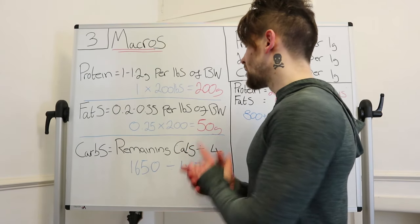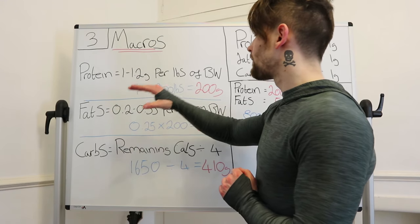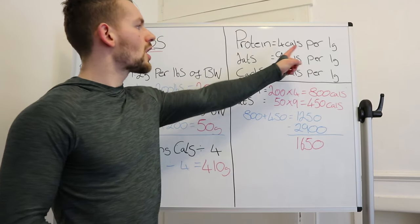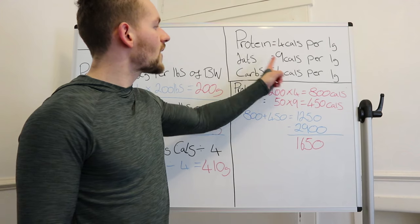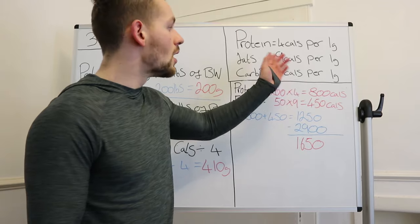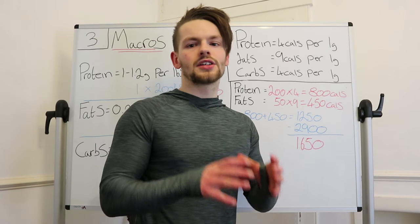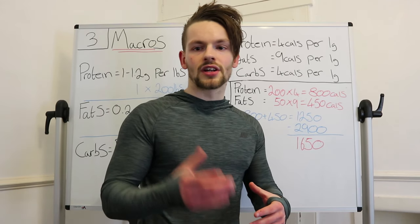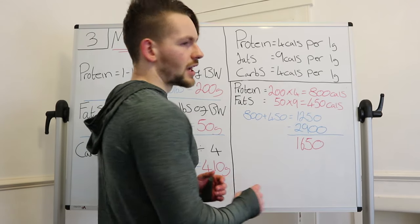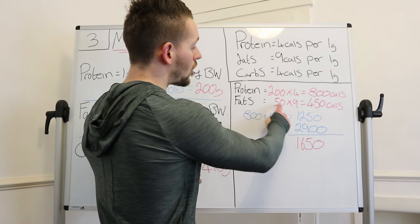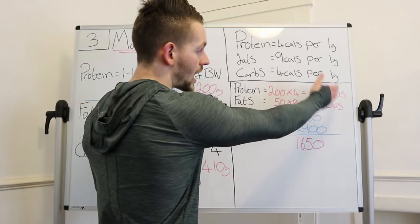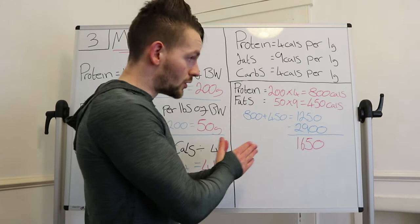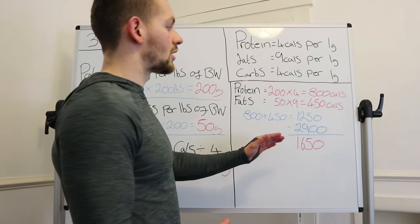We need to take a different approach to working out carbohydrates, because first we need to figure out how many calories are coming from our protein and fats in order to work out the carbs. For every 1 gram of protein, it's 4 calories. For every 1 gram of fat, it's 9 calories. And for every 1 gram of carbs, it's 4 calories. So our protein intake is 200 grams — 200 times 4 gives us 800 calories from protein, out of our total 2,900.